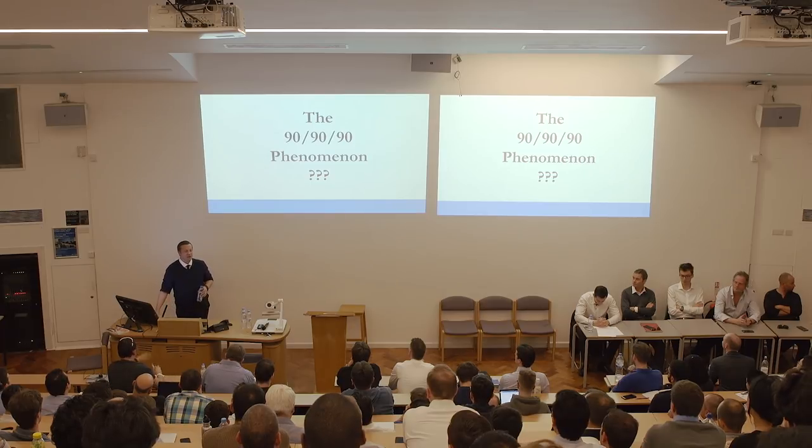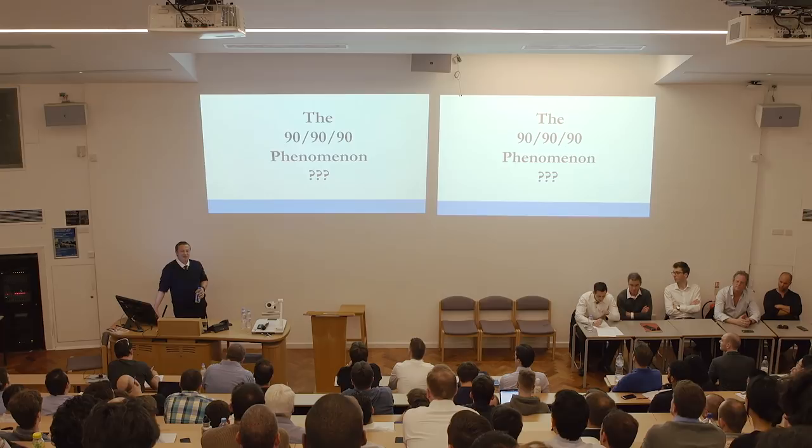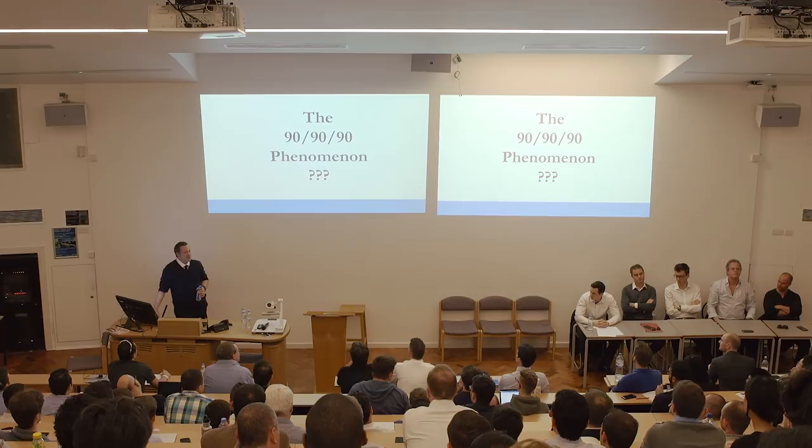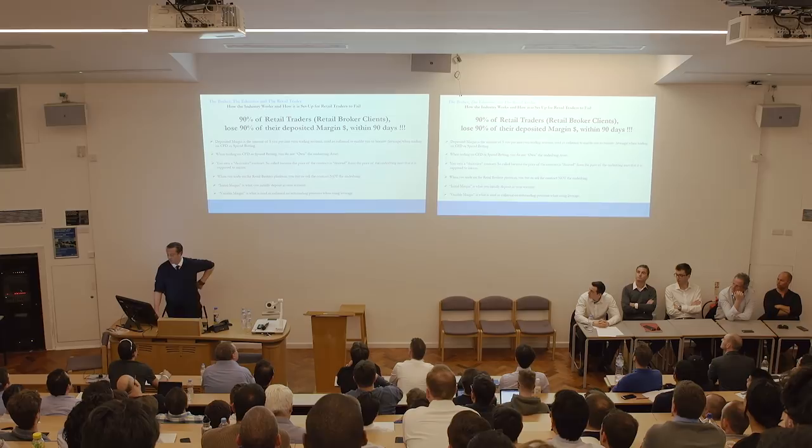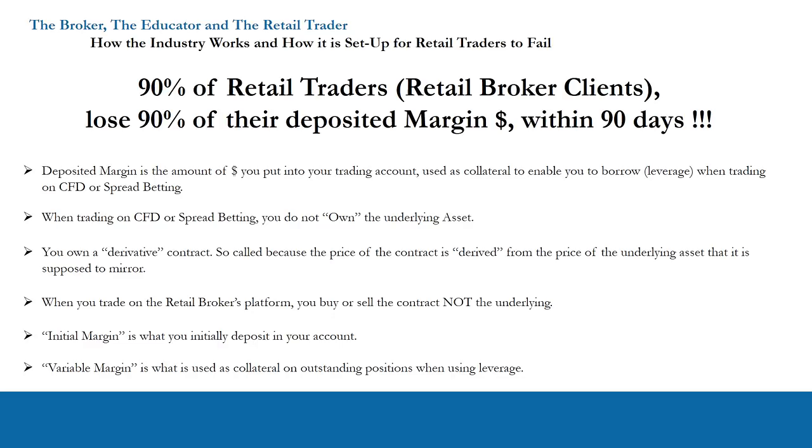The 90-90-90 phenomenon — who knows what that stands for? 90% of traders lose 90% of their money. To be specific: 90% of retail traders — the retail broker's clients — lose 90% of their deposited margin within 90 days.